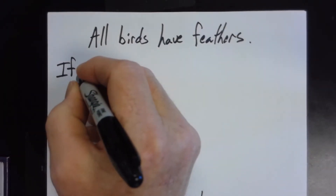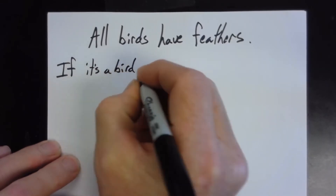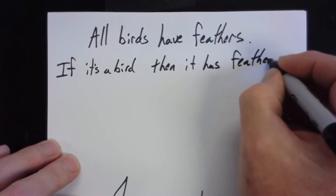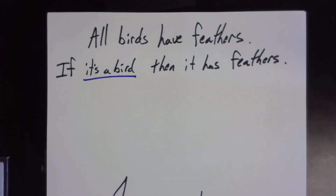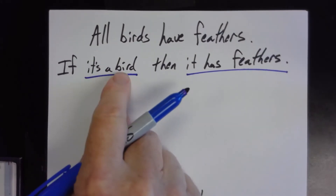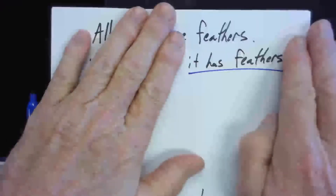We should probably write it more properly as 'if an animal is a bird, then it has feathers,' but let's keep it simple. Now, that particular if-then statement happens to be true — that's the definition of a bird. Now one thing we have to be clear about: 'it's a bird' is the hypothesis; 'it has feathers' is the conclusion. If you're asked for the hypothesis and you say 'if it's a bird,' you would be wrong. The word 'if' is not part of the hypothesis, and 'then' is not part of the conclusion.